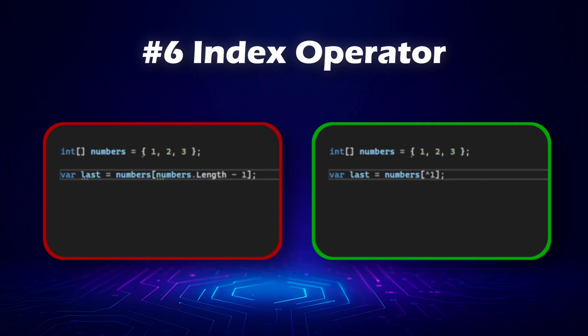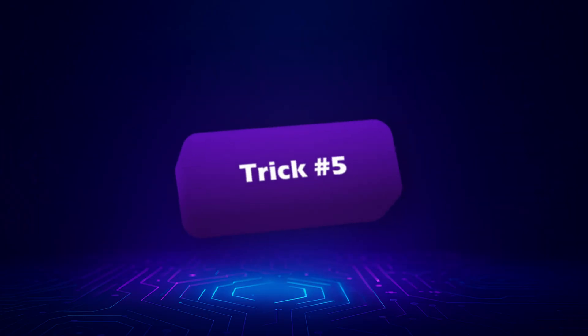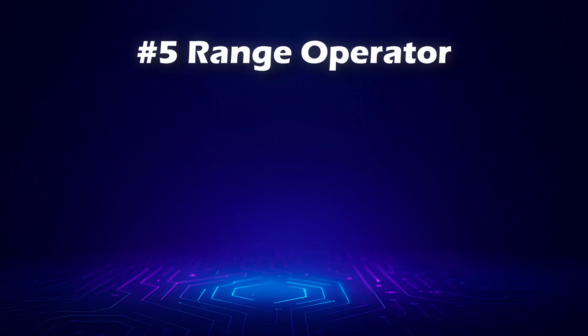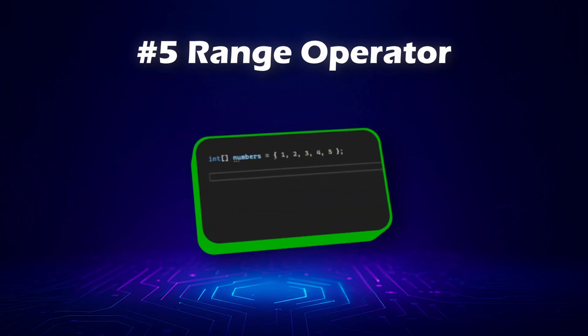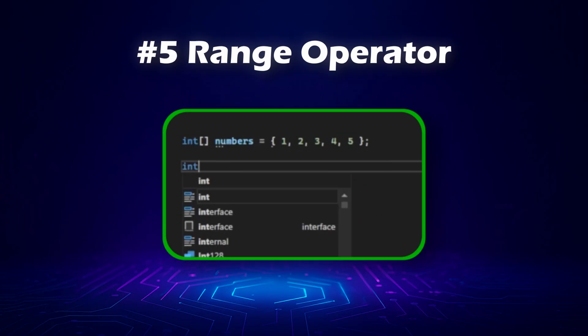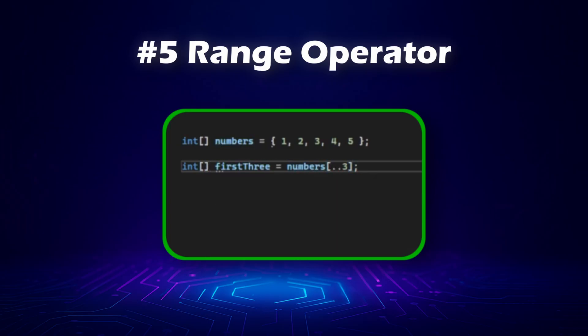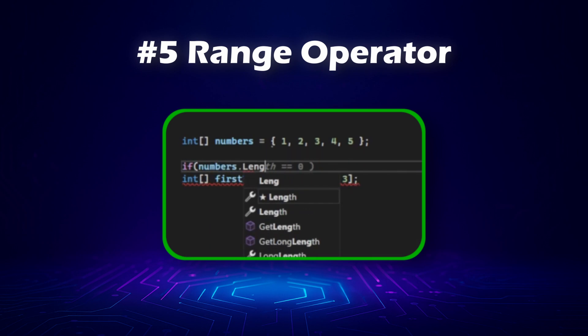Let's move on to trick number 5: the range operator. It's used to take a specific number of elements from an array. You write it like this, but you have to be a little careful — if the length of the array is smaller than the number of elements you want to extract, an exception will be thrown. So I recommend checking the length first before using this.